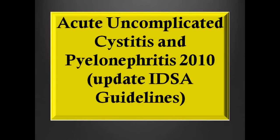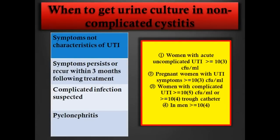This is the 2010 guideline, updated from 1999. For uncomplicated cystitis, the signs and symptoms — urgency, burning — have such a high positive predictive value in a young woman that we don't need to order urine cultures for uncomplicated cystitis.